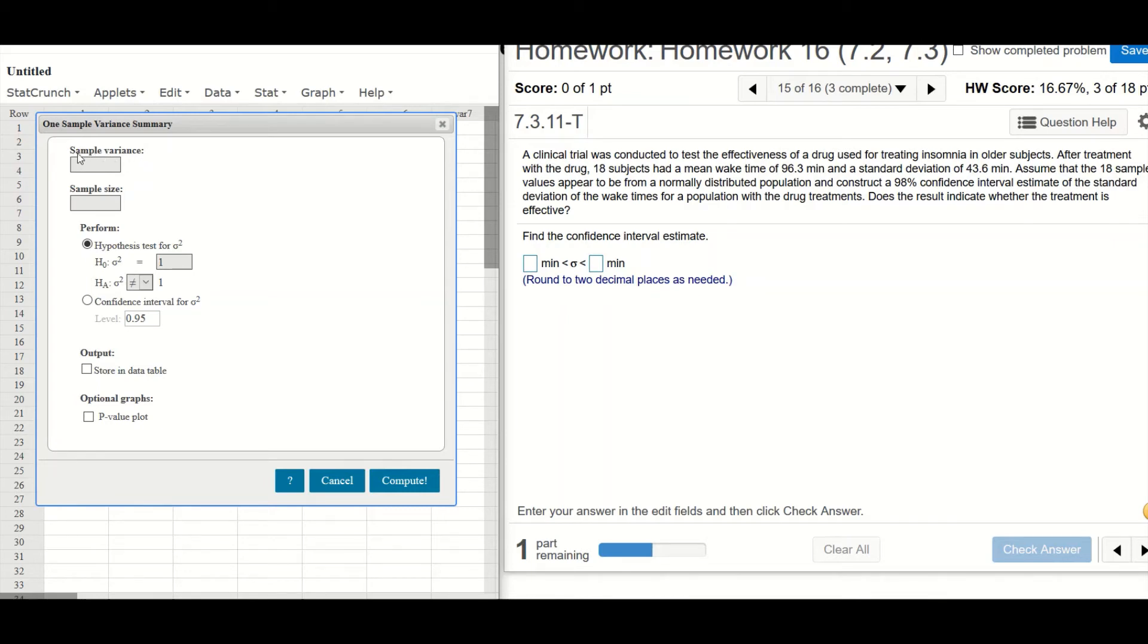Okay, sample variance. So notice that we're asked to put sample variance in the blank. And what's given to us? The standard deviation of 43.6. This is a standard deviation. So you need to square that 43.6 to make it the variance. I'll just do this squared. That's the sample variance.